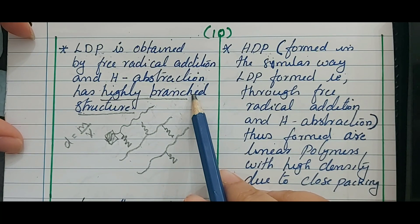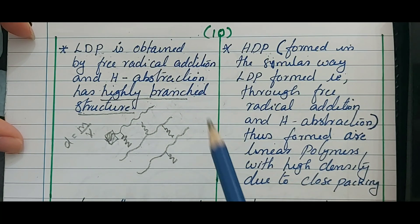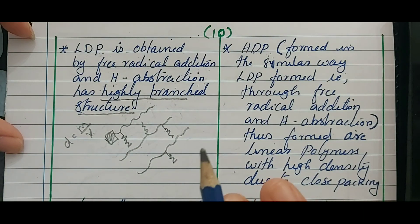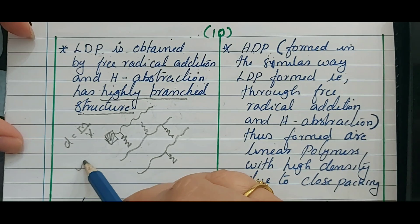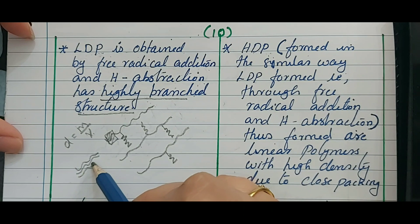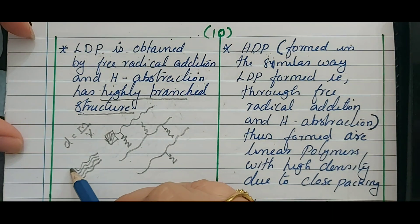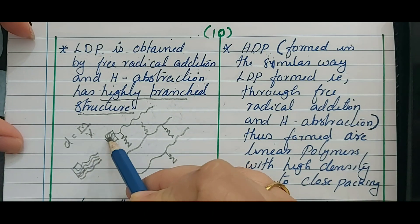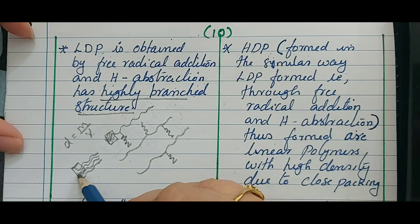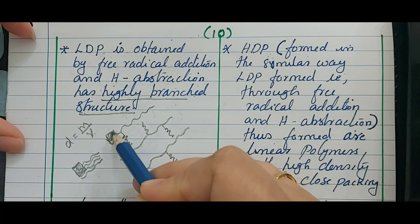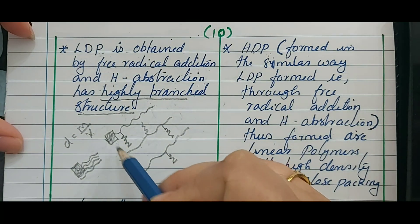HDP is less branched and has close packing — these are actually linear polymers. The structure is linear chain after linear chain. Per unit volume you can see more number of particles in HDP compared to LDP, where more gaps exist because of the branching.